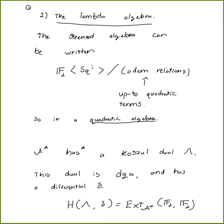You can actually write computer programs to compute the E2 page of the Adams spectral sequence using the Lambda algebra. I was lying slightly when I said A-star has a Koszul dual — you have to homogenize the Steenrod algebra first — but it's an extremely tractable way to compute large portions of the E2 page, with the differential written directly in terms of the Adem relations.